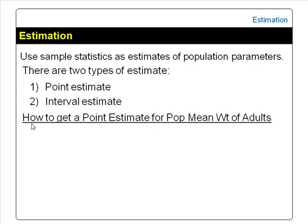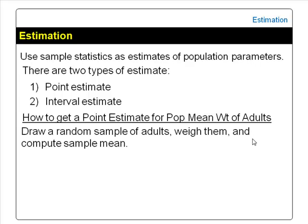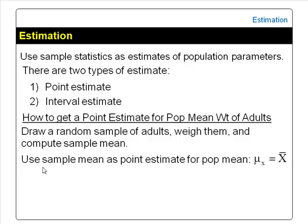How can we get a point estimate for the population mean weight of adults? We have to draw a random sample of adults from the population, weigh each adult in the sample, compute the sample mean, and use it as an estimate for the population mean weight of adults. This is a point estimate.